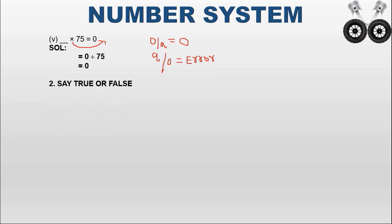Now, true or false. The first statement: minus 15 into 5 equals 75. We check: 15 into 5 equals 75, but one integer is positive and the other is negative — different signs — so the answer should be minus 75. The given condition states positive 75, so the statement is false.